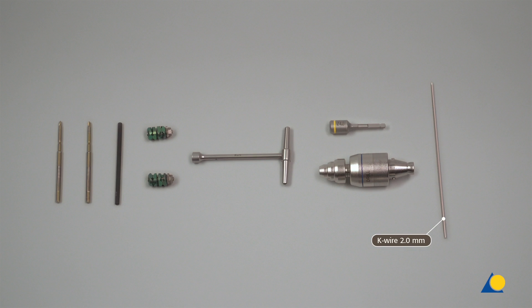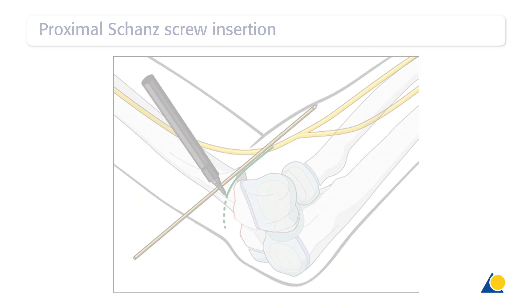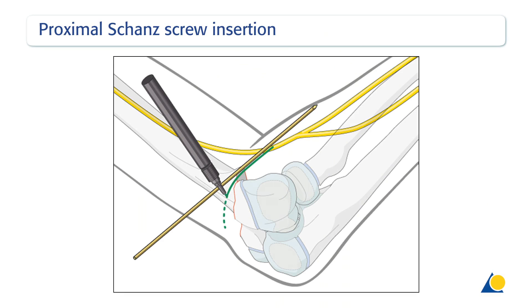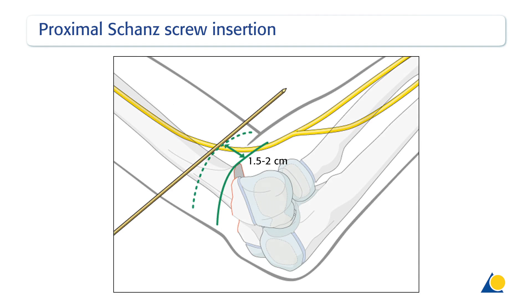The K-wire will be used to prevent rotation of the distal fragment at the fracture site. In a clinical situation, the proximal fracture level is identified under image intensification with the help of a K-wire. Using this line for reference, the safe level for screw insertion is 1.5 to 2 cm proximal to the fracture level. More proximal insertion can damage the radial nerve.